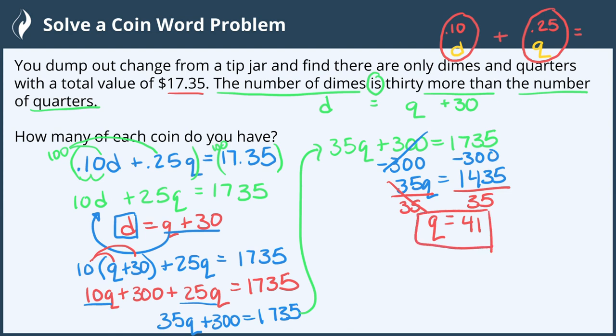Now we can substitute this into one of the original equations to find out how many dimes we have. I'm going to use the second equation because it's already solved for D. So we have D equals Q plus 30, which gives us D equals 41 plus 30, so D equals 71.